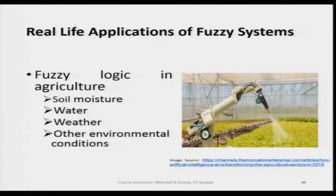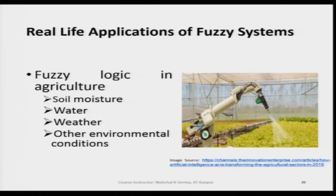Another application is fuzzy logic in agriculture. Fuzzy logic based systems are used in agriculture for decision making based on soil moisture, water, weather, and other environmental conditions — expressed as linguistic values like low, high, or very high — and based on these inputs, appropriate decisions are taken to enhance overall agricultural performance.